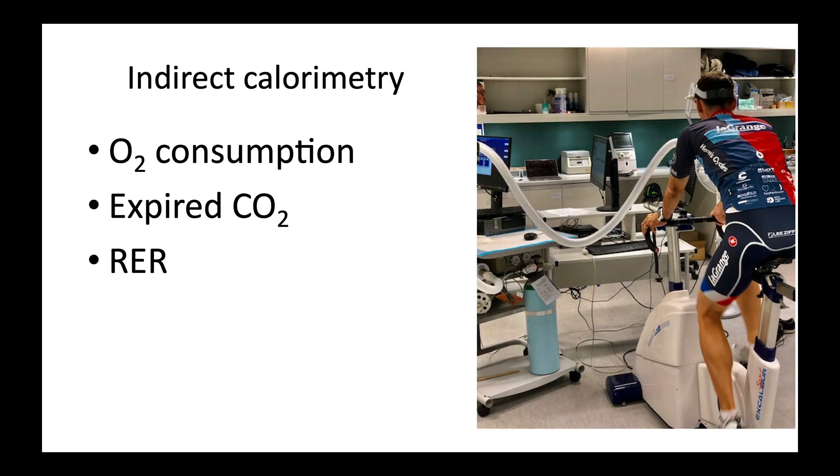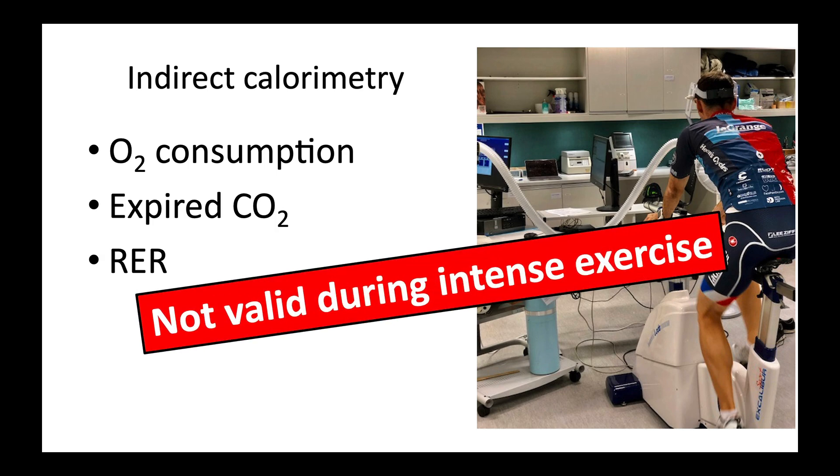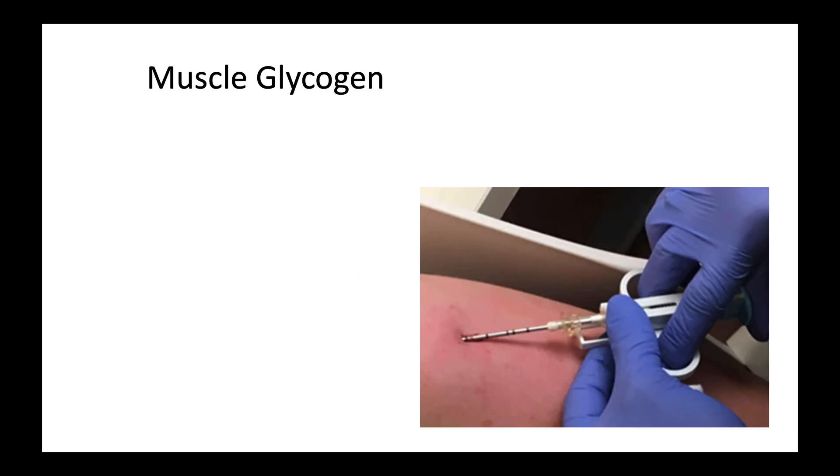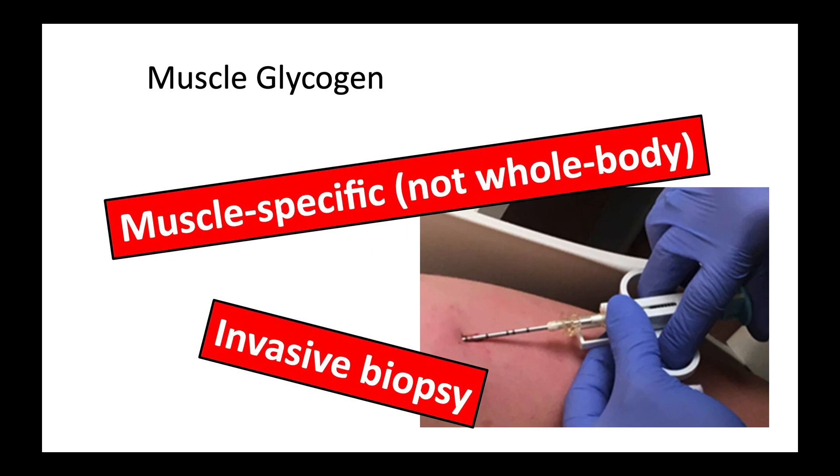Carb use is estimated using indirect calorimetry, but this method is not valid during high-intensity exercise due to shifting acid-base balance and excess CO2 excretion. Changes in muscle glycogen are often used to estimate carb use, but this requires an invasive muscle biopsy with medical supervision and doesn't provide information on whole body carbohydrate use. Also, the level of glycogen depletion can vary with repeated sampling from the same person.